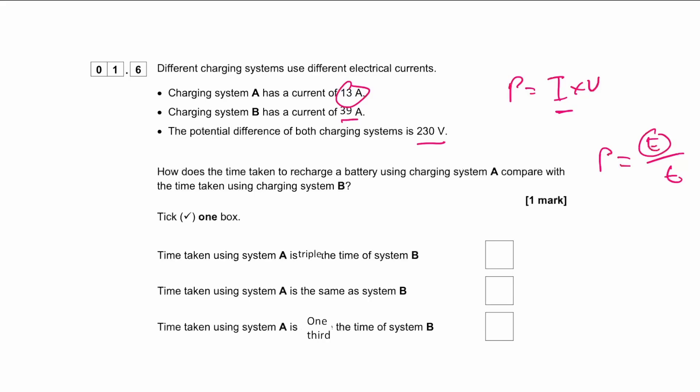If our energy transferred is the same — since we're charging the same battery — the time taken changes with power output. Higher power means lower time. Power is inversely proportional to time. Since current is also proportional to power, current is inversely proportional to time. So if the current triples from A to B, system B will take one third of the time of system A. Therefore, system A takes triple the time of system B — that's the correct answer, the first option.